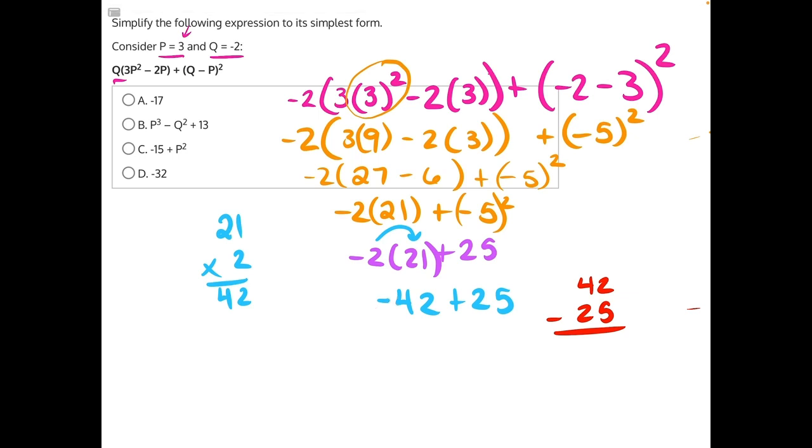Now let's do the subtraction. We would need to borrow. 12 minus 5 will give us 7, and then 3 minus 2 will give us 1. And remember, biggest number carries the sign, so it's going to be negative 17. Making that our most simplified form. Answer choice A is our correct answer.